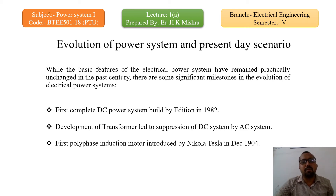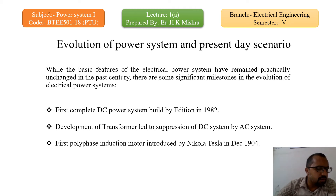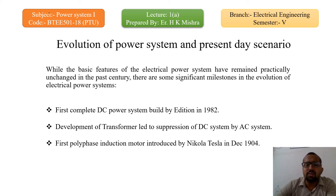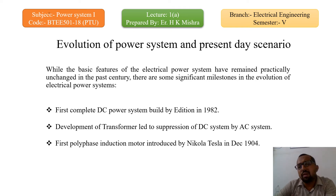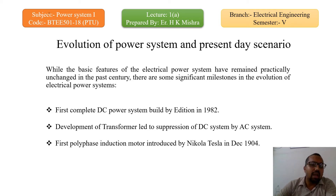The first complete DC power system was built by Edison in 1882. The first time, incandescent lamps were used for the power supply, and the overall radius of the network was only 1.5 kilometers. It was a DC network having a 110-volt supply. This first power network was developed and introduced by Edison in 1882, with a voltage level of 110 volts and a distribution network radius of approximately 1.5 kilometers.